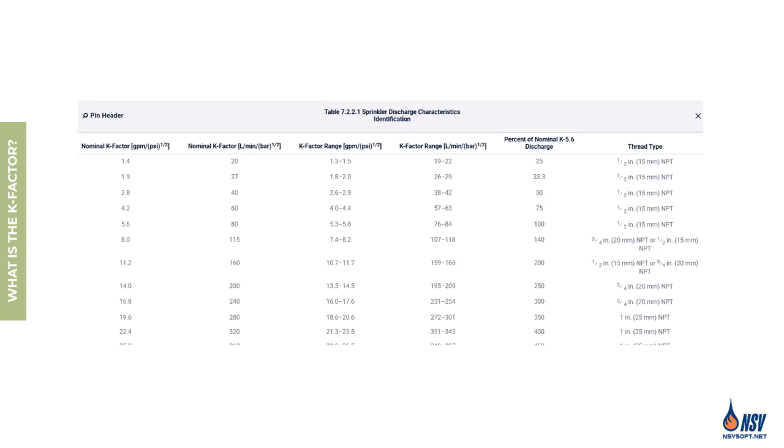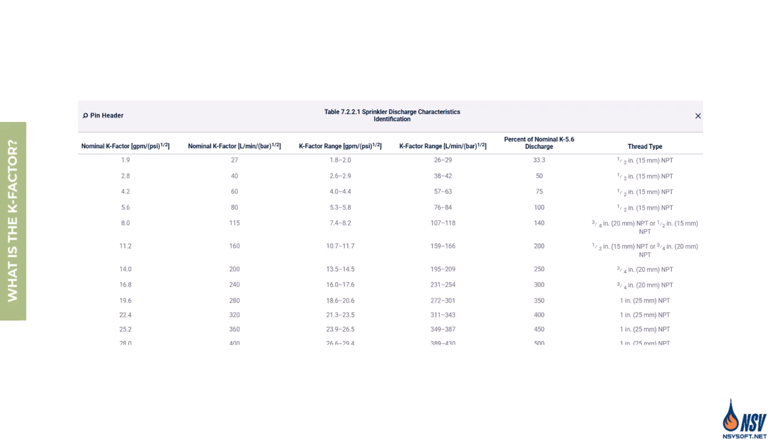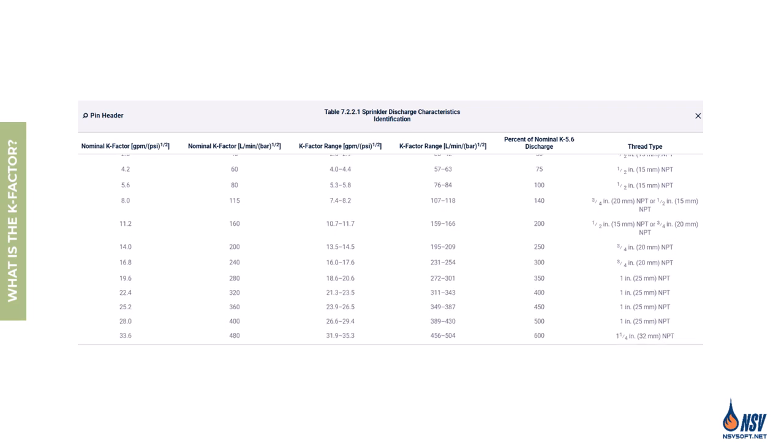In metric units, the K factor is expressed as liters per minute per square root of bar. NFPA 13 outlines the acceptable K factors for sprinklers in Table 7.2.2.1, and sprinkler manufacturers are required to comply with these specifications. Choosing sprinklers with the appropriate K factor is one of the most important aspects of system design — in some cases guided by NFPA 13 requirements, and in others left to the designer's discretion to optimize hydraulic performance.